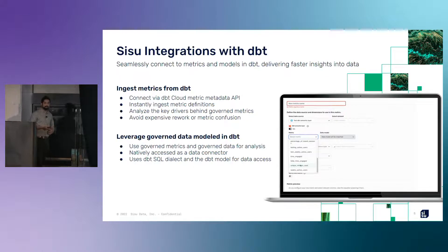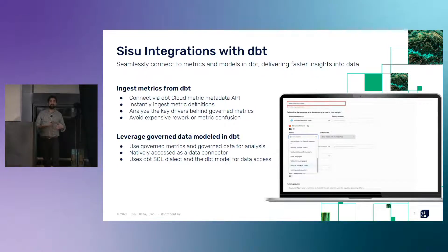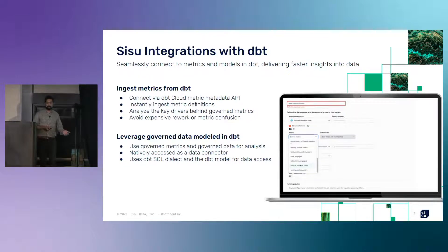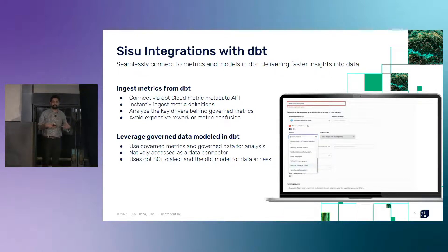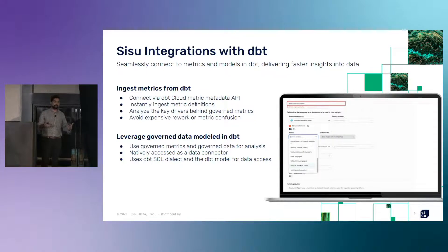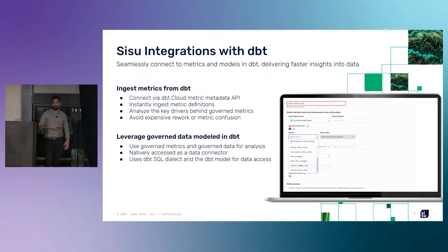How does this work with DBT? We've recently integrated with DBT Metrics. Instead of having to define all those metrics inside Sisu, you can have all your data models inside DBT, define those metrics in DBT, and when you come to Sisu you connect to DBT just like a normal data source — similar to connecting with Snowflake — and you get the list of metrics you defined inside DBT automatically inside Sisu. This is really useful because if you're defining those metrics centrally, you're probably using them across multiple data products, whether it's your BI tool, a tool like Sisu, or notebooks. You can define metrics centrally and use them in a well-governed fashion across all these tools. Sisu also supports the DBT SQL dialect, so you can run SQL inside Sisu directly using the DBT backend.